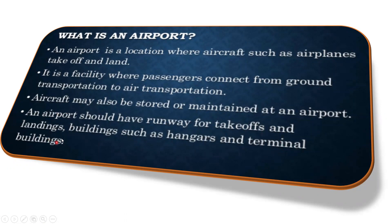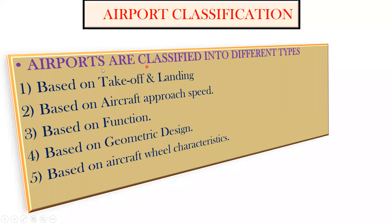That is the terminal buildings. Now, airports are classified into different types. First is based on takeoff and landing. The second is based on aircraft approach speed. The third one is based on the function of the airport. The fourth one is based on the geometric design, and the fifth one is based on the aircraft wheel characteristics.